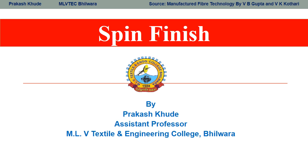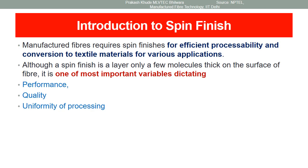Today we will discuss spin finish — what components are required, what properties are needed, the basic rules, and how spin finish is applied on filament yarn. We have discussed spin finish in earlier lectures. It is basically required for emission processing and when converting filament for various applications. Although spin finish is just a layer of a few molecules applied onto the surface of the fiber.